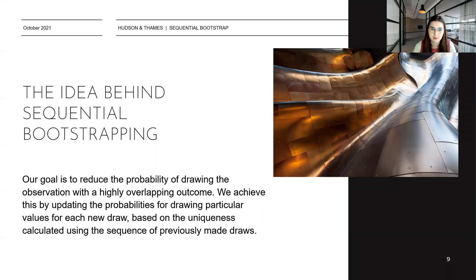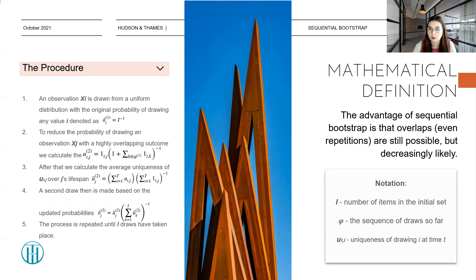The idea behind the sequential bootstrap is to reduce the probability of drawing an observation with a highly overlapping outcome. We achieve this by updating the probabilities for drawing particular values for each new draw, based on the uniqueness calculated using the sequence of previously made draws. The biggest advantage of the sequential bootstrap is that overlaps and even repetitions are still possible, but decreasingly likely, so we're keeping most of our information inside and available for us.